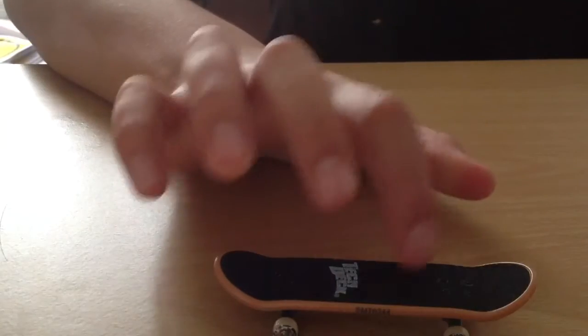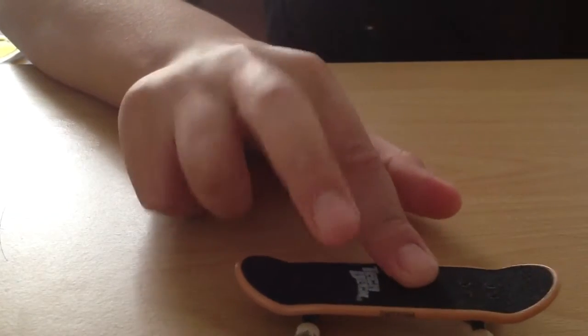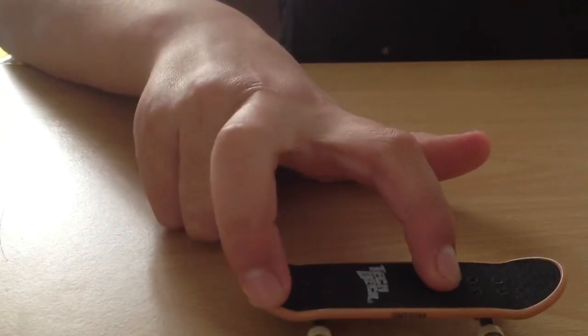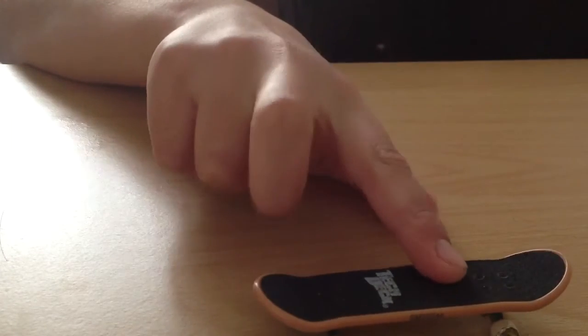First, you put your index finger in the middle of the deck over here, and your middle finger on the tail of the deck but closer to the edge so you can use that to flick back.